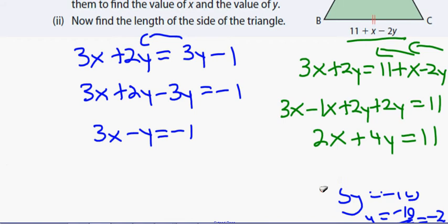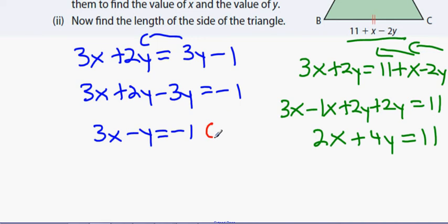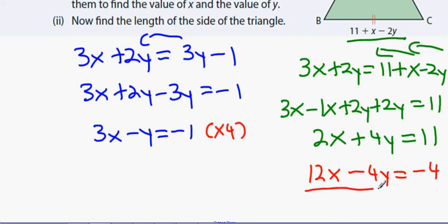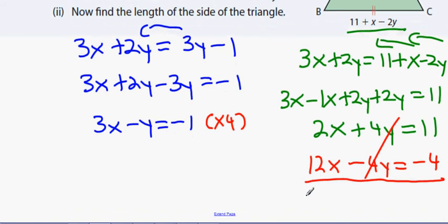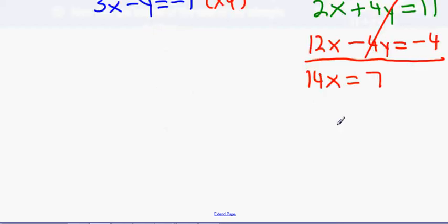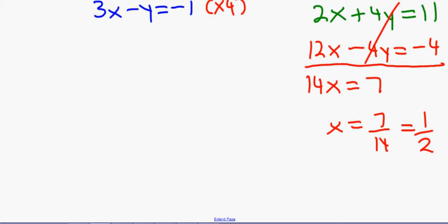To solve the two equations, I multiply the first equation by 4, giving 12x minus 4y equals minus 4. Adding to 2x plus 4y equals 11: the 4y's cancel, leaving 14x equals 7, so x equals 7 over 14 which is one half.